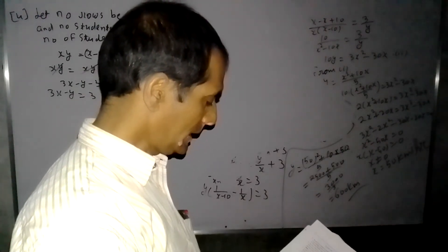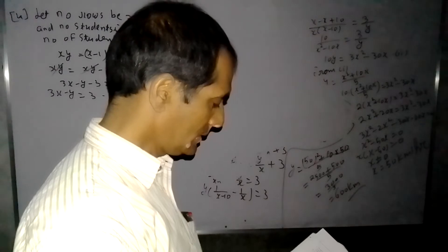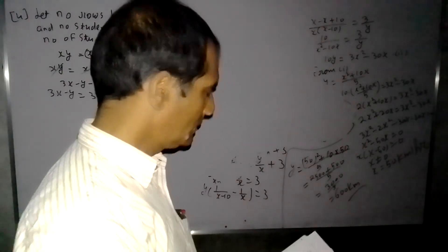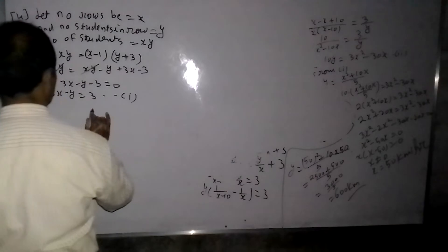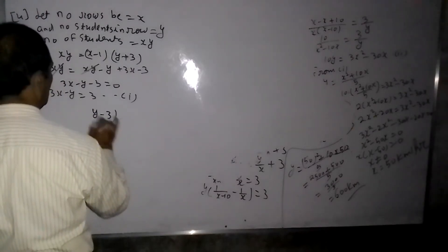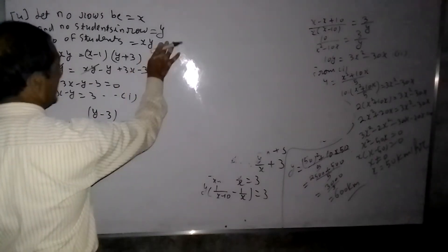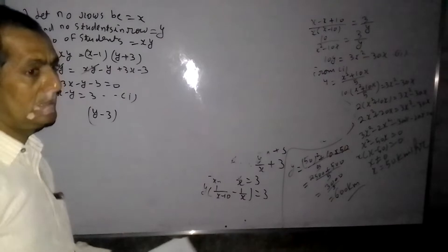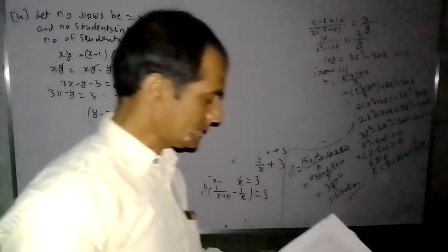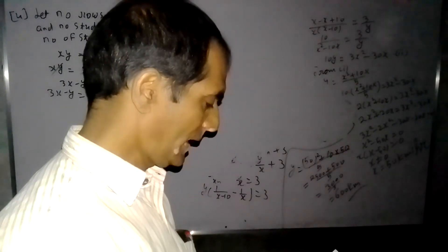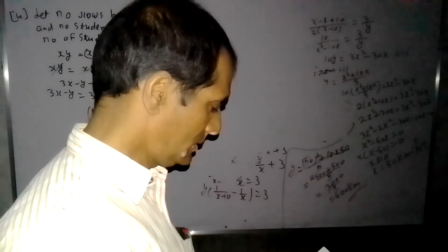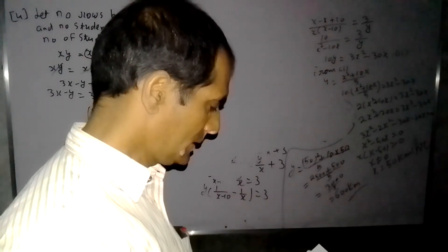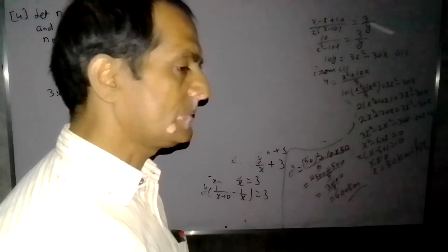If the students are less in a row — 3 fewer students per row — then the number of rows increases. There will be 2 more rows, so X plus 2 rows.